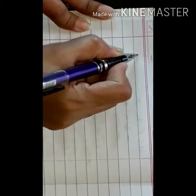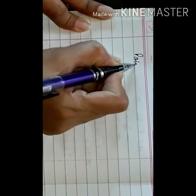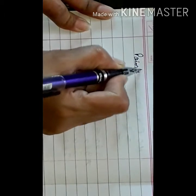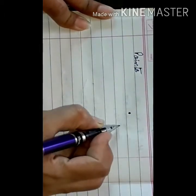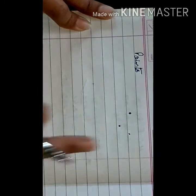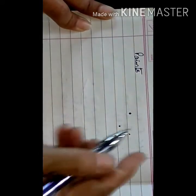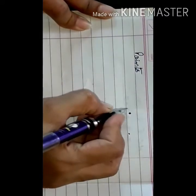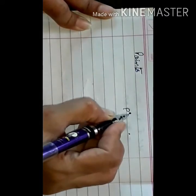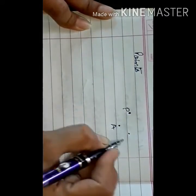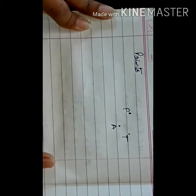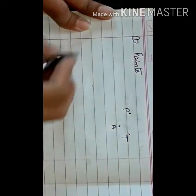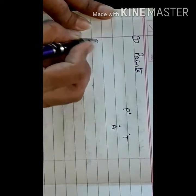The first thing is points. These are points — known as point P, point A, and point T. The second thing is line segment.